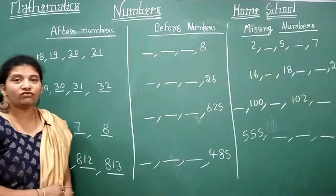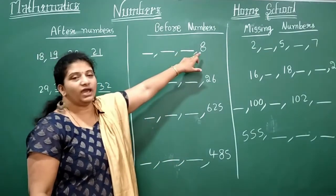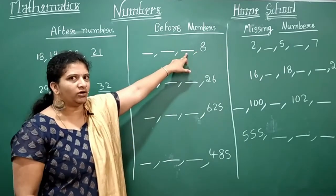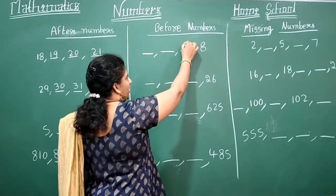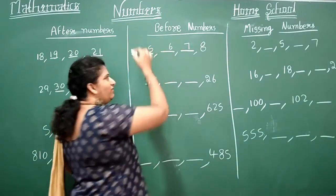So next see the before numbers children. Before numbers, backward numbers. So 8, backward number, what do you have here? 7, come backward? 6, 5. That's it.